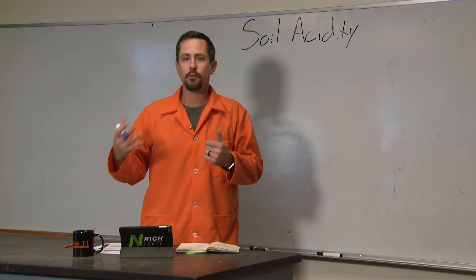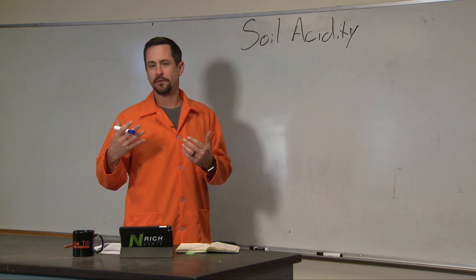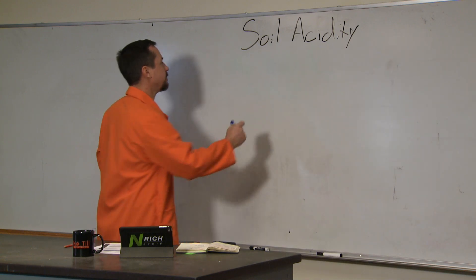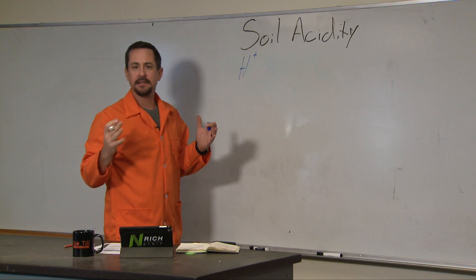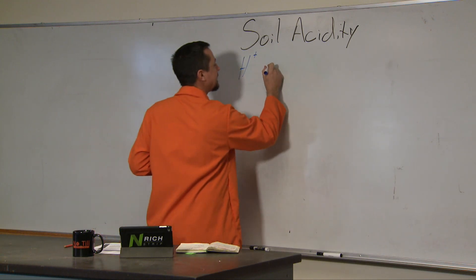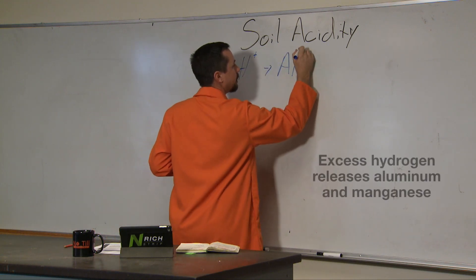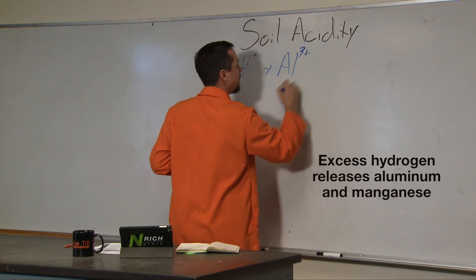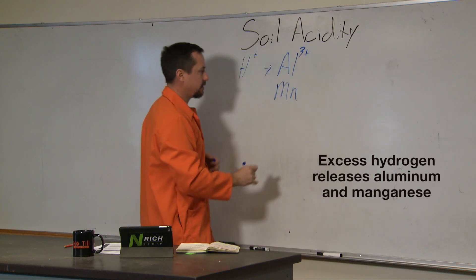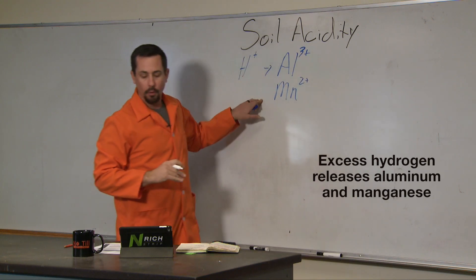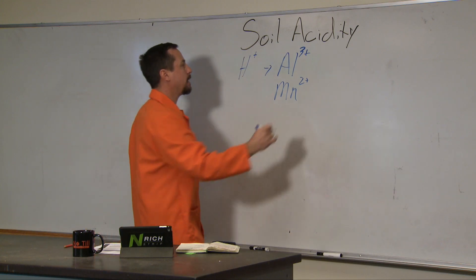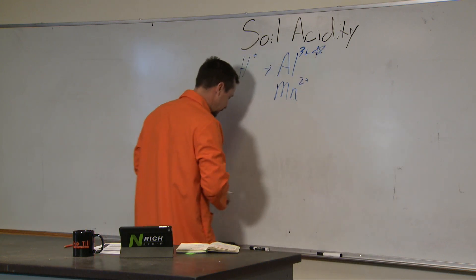What happens is when we have more of those hydrogens in soil solution, those H+ react in the soil and help release aluminum 3+ and manganese 2+. What we have to worry about in Oklahoma are these aluminum 3+ ions.